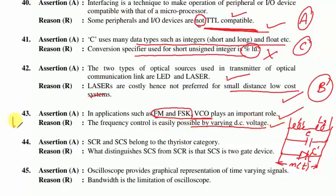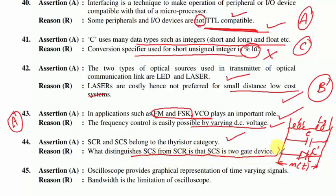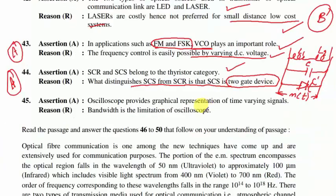Question 44: SCR and SCS belong to the thyristor family — true (thyristors include TRIAC, GTO, etc.). What distinguishes SCS from SCR is that SCS is a two-gate device — true statement. Option A follows.